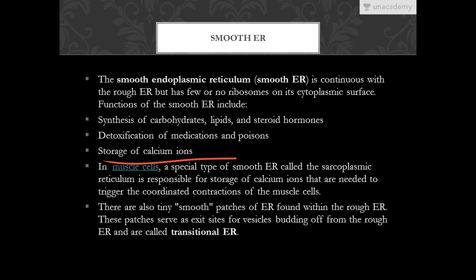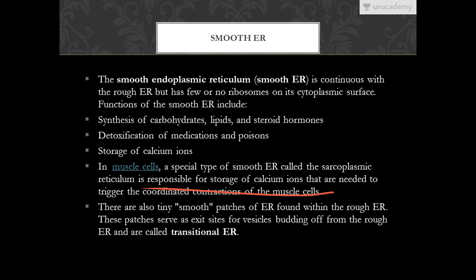In muscle cells, a special type of smooth ER called the sarcoplasmic reticulum is responsible for storage of calcium ions that are needed to trigger the coordinated contractions of the muscle cells. These calcium ions are stored in the sarcoplasmic reticulum.